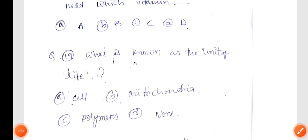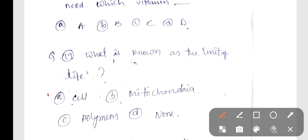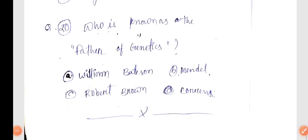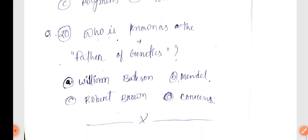Next, Q18: What is known as the unit of life? The unit of life is the cell. Next, last question Q19: Who is known as the father of genetics? The father of genetics is Mendel, Option B.